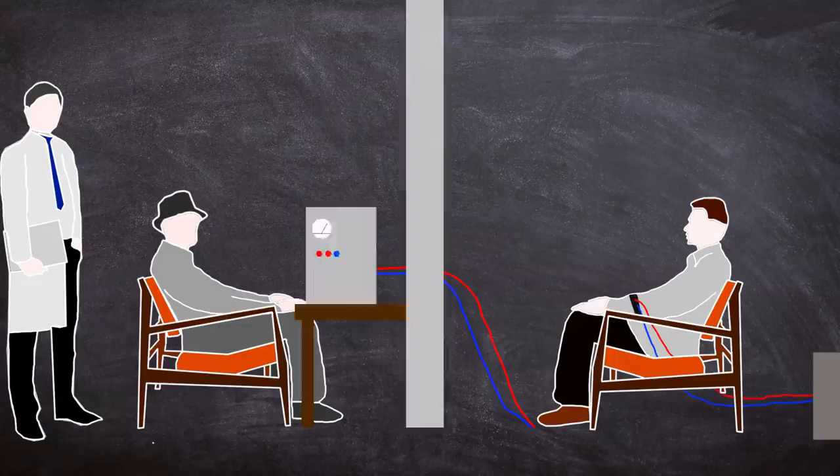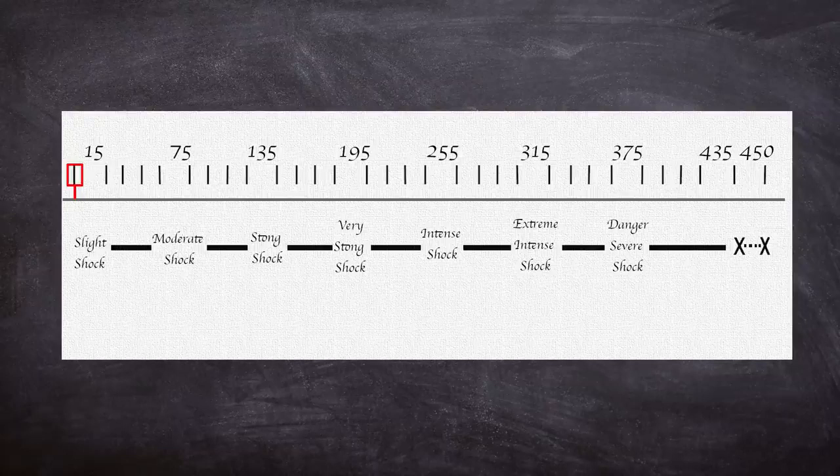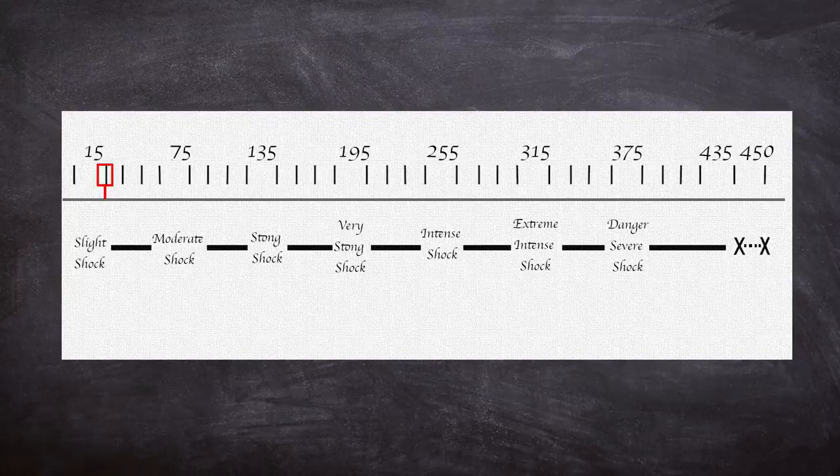Each subsequent incorrect answer would mean the teacher had to increase the voltage in 15-volt increments. They were also instructed to announce the voltage before shocking the learner.